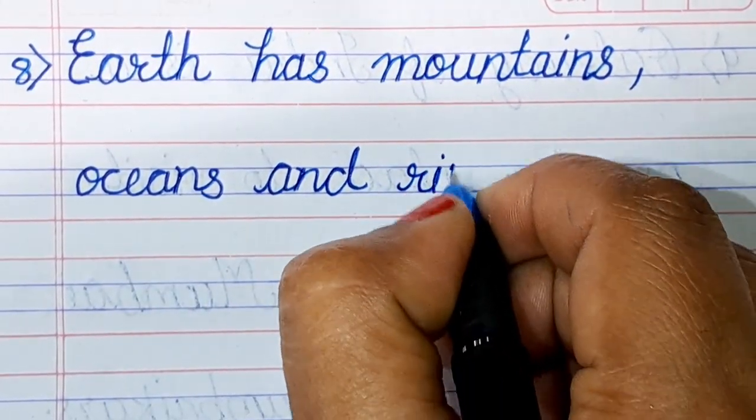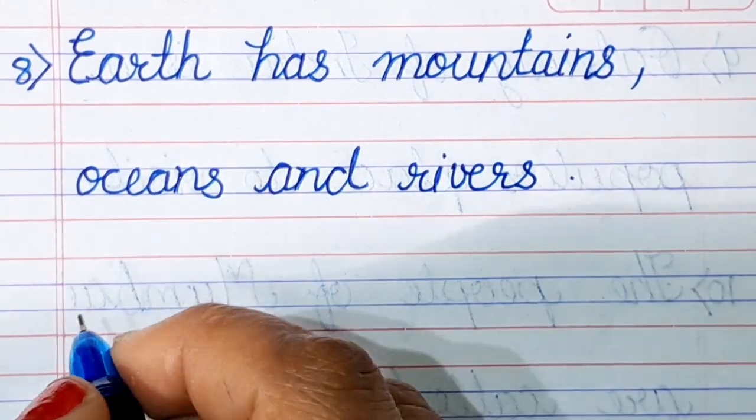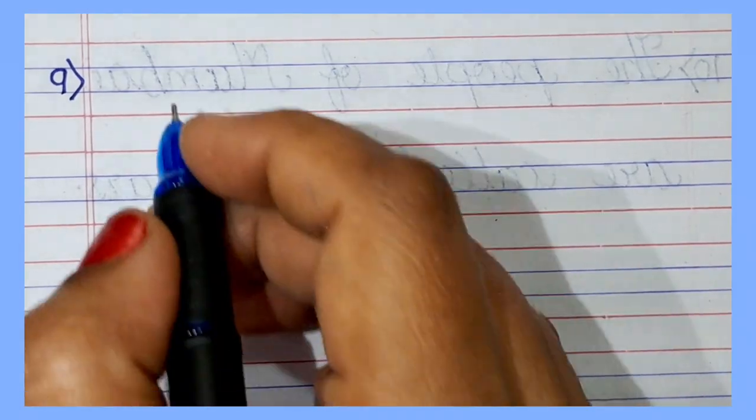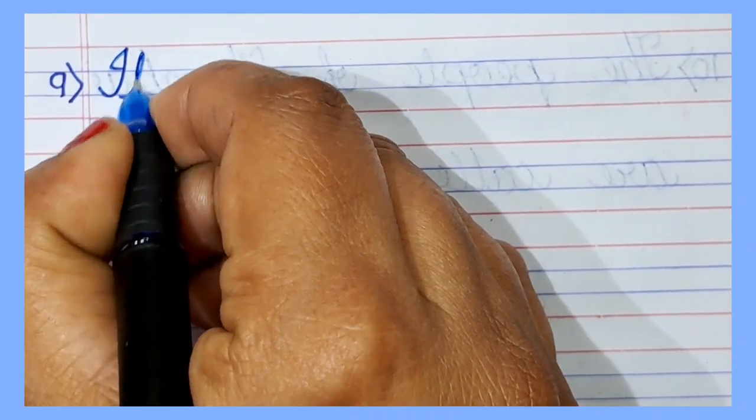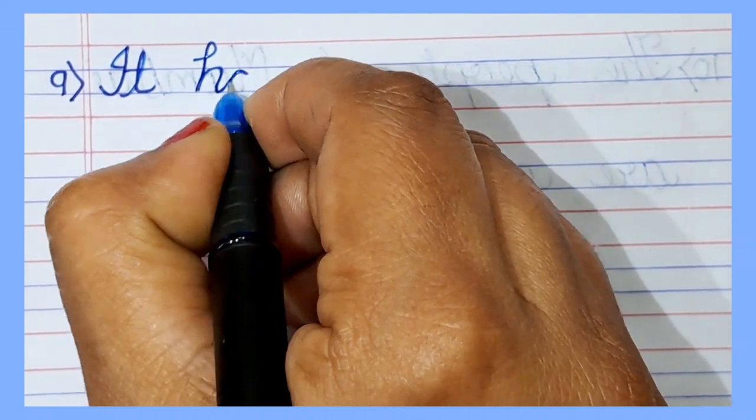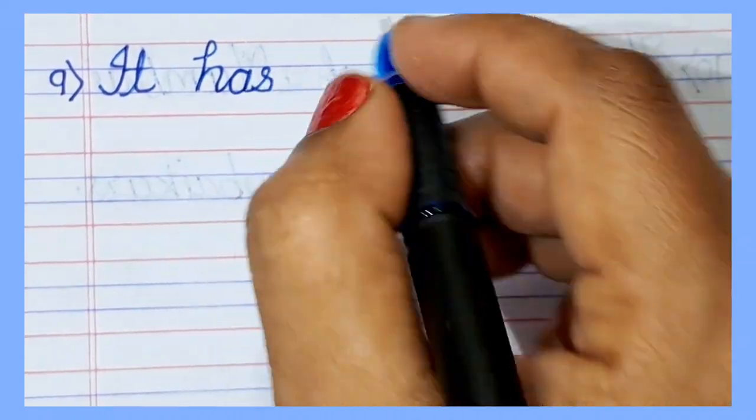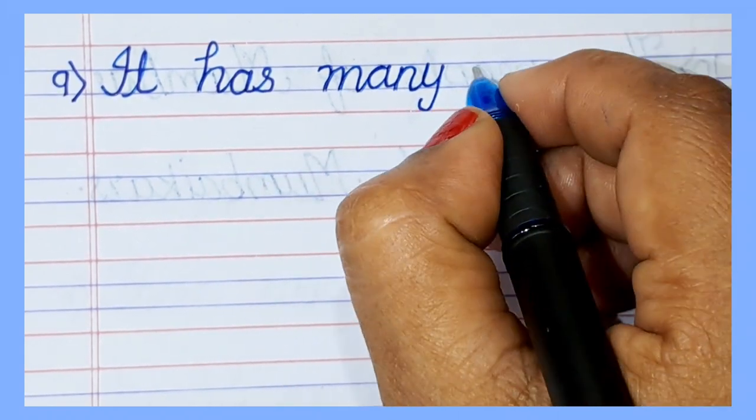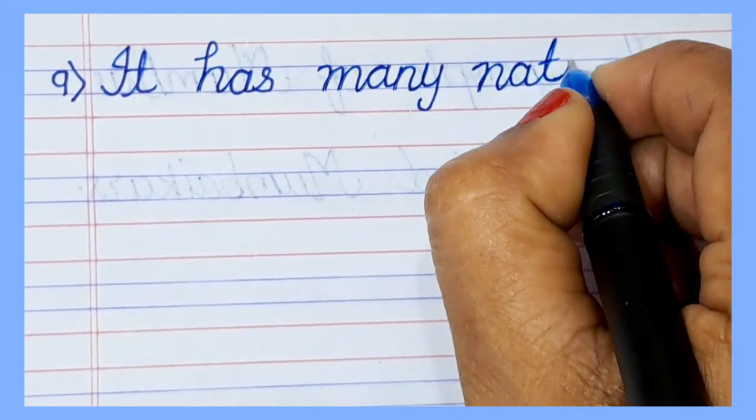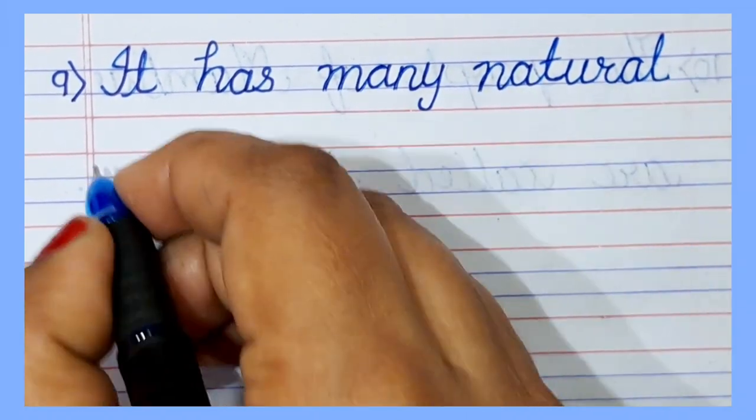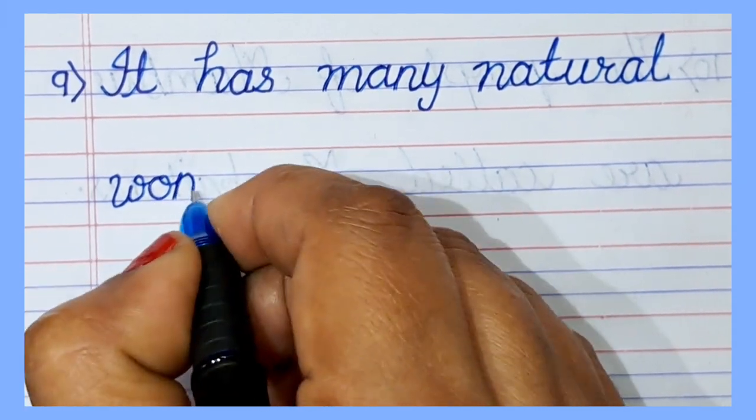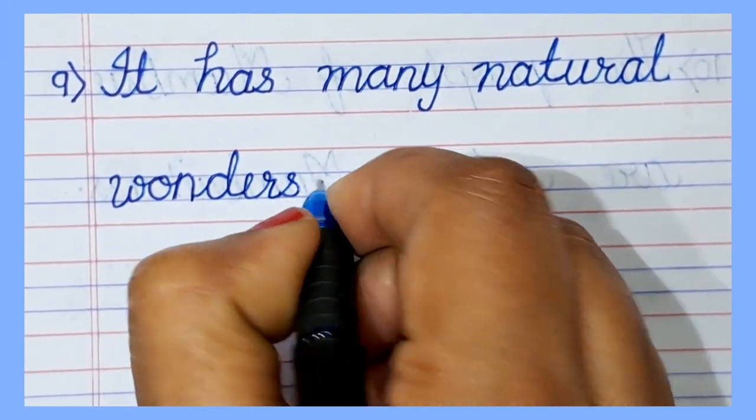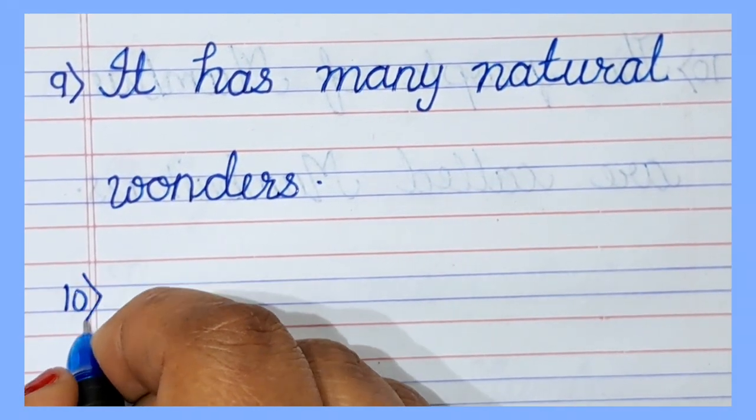Earth has mountains, oceans and rivers. It has many natural wonders.